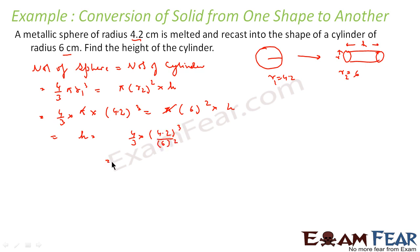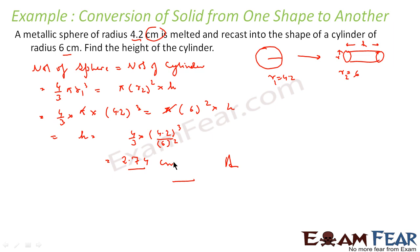Solving further, we get h equals 4/3 into (4.2)³ divided by 36, which gives h equals 2.74 cm. We are talking about height, so the unit will be centimeter. If we were talking about area it would be centimeter squared, or volume would be centimeter cubed — but since we are talking about height, the unit is centimeter. Very simple: the volume of the sphere equals the volume of the cylinder.